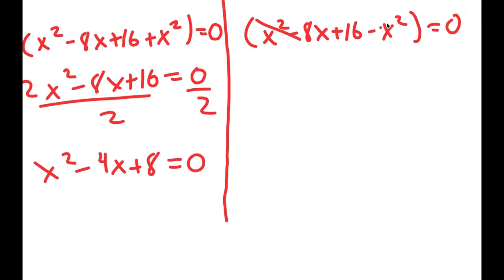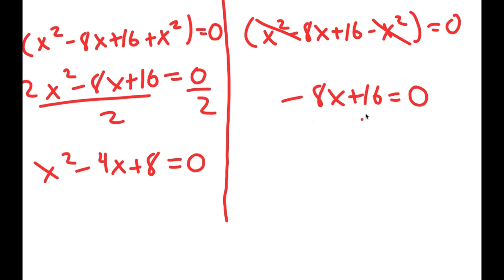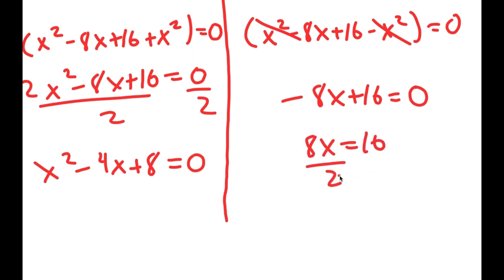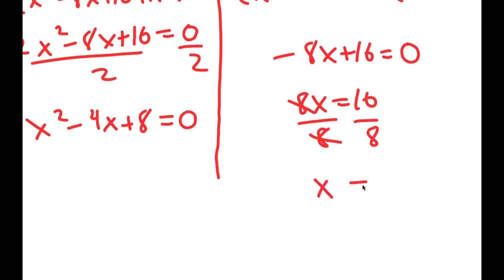From my right-hand side, the x squared terms cancel out, and I get negative 8x plus 16 is equal to 0. I'm going to add 8x on both sides, so I get 8x is equal to 16. Now if I divide both sides by 8, these two cancel out, and I get x is equal to 2.